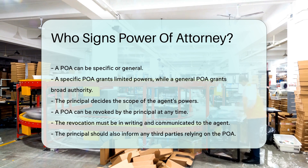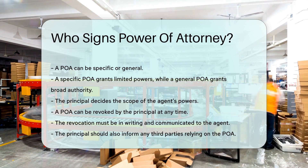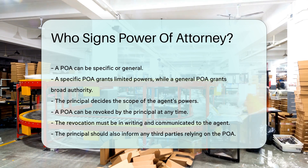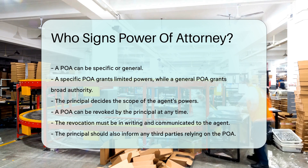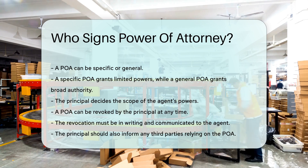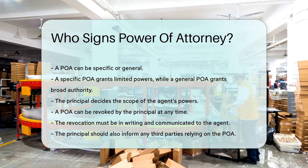A POA can be revoked by the principal at any time. The revocation must be in writing and communicated to the agent. The principal should also inform any third parties relying on the POA.